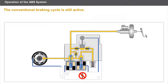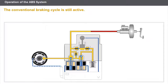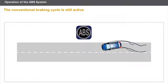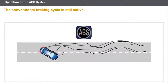When the ABS system ceases to be operational, all the solenoids are deactivated and are automatically reset to the rest position. The conventional braking cycle is still active, and the circuit pressure is directly sent to the brake cylinders. However, the driver must be aware of the consequences of driving without ABS or with the ABS system inoperative.